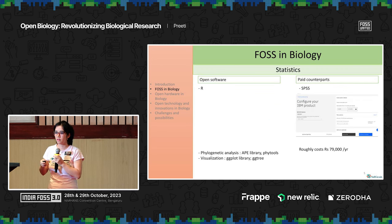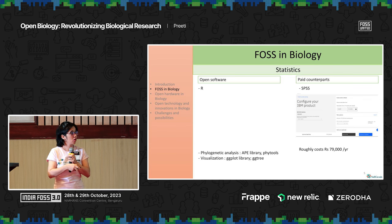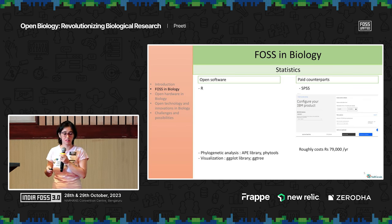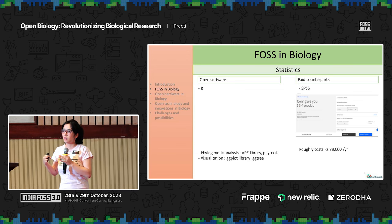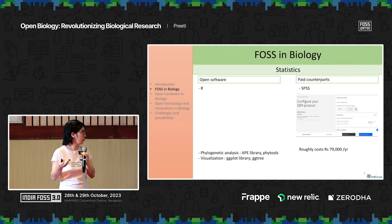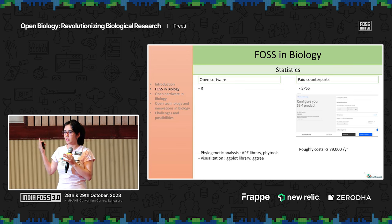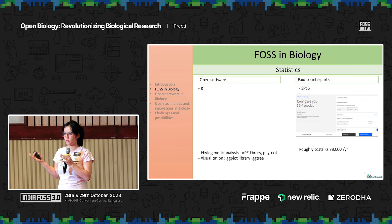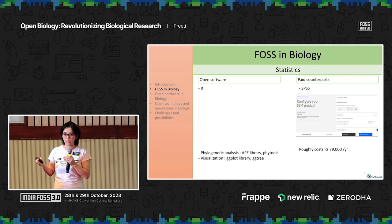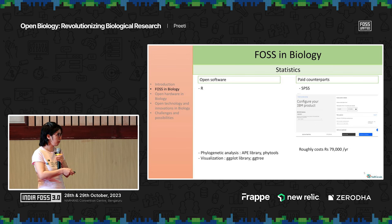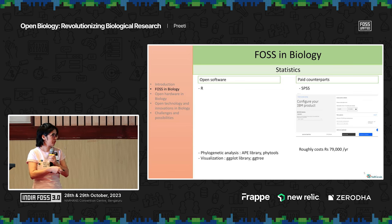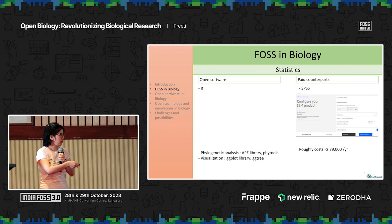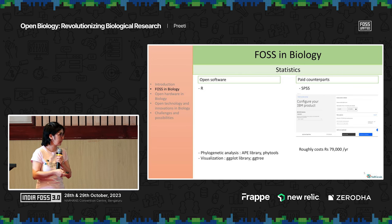SPSS actually costs roughly around 79,000 per year, which is extremely costly, and R on the other hand is free. Another very useful aspect of R, especially in academia, is that when somebody publishes a new paper, a new technique, or a new method for analysis, R will have it within months — but that's not the case with paid software. Some common packages I've used are APE and tools for phylogenetic analysis, and for visualization, the ggplot library and ggtree.